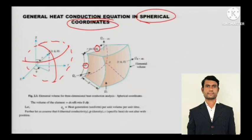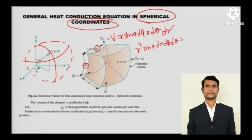So the volume of this spherical coordinate will be r sine theta d-phi - I am talking about the volume - r d-theta and dr. So it will be r square sine theta dr d-phi d-theta. So this is the volume, as these are the dimensions of the spherical element.